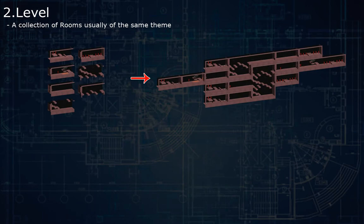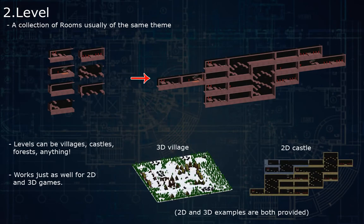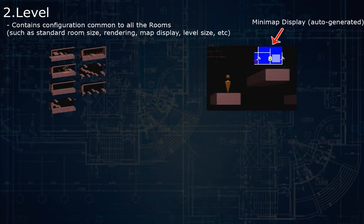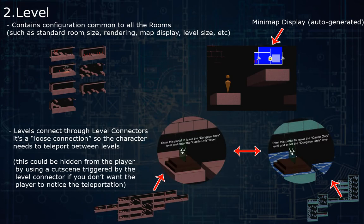A level is a collection of rooms, usually of the same theme. For example, a village or a castle could be a level in a dungeon. Any dungeon can hold as many levels as you want. The level will also contain configuration that is common to all its rooms. It will connect to other levels through level connectors, and this is also a loose connection — just like the dungeon connection — so you need a teleport script to move from one level to another.